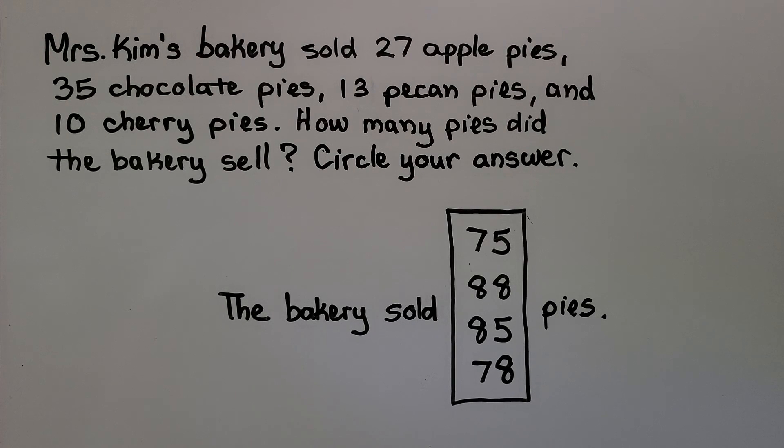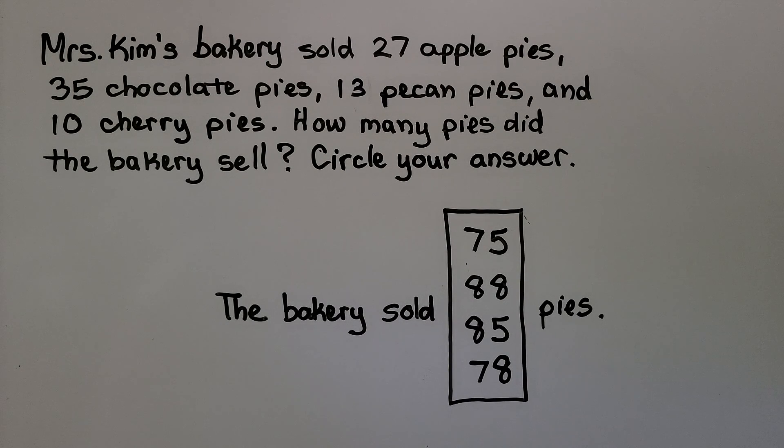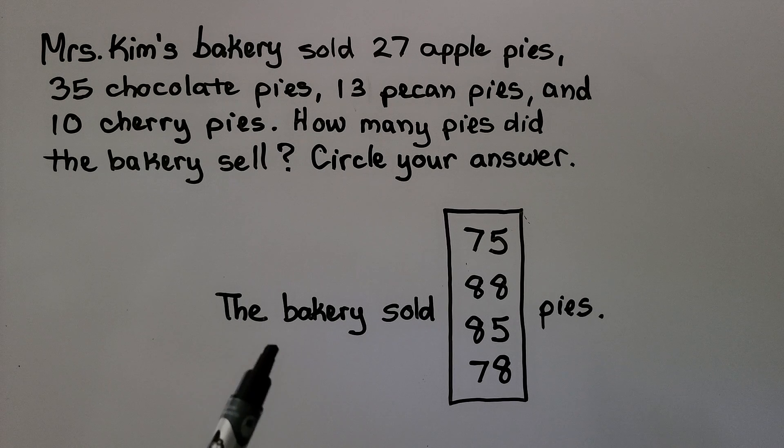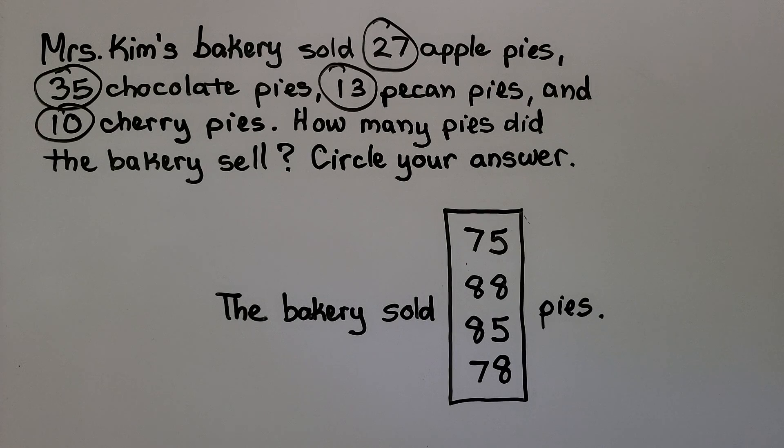Mrs. Kim's bakery sold 27 apple pies, 35 chocolate pies, 13 pecan pies, and 10 cherry pies. How many pies did the bakery sell? Circle your answer. So it says the bakery sold, and then we need to circle one of these for the correct number of pies that the bakery sold. We can circle the important information. We circle the number of different types of pies that they sold. And we need a total to find how many they sold. So we can write them as an addition problem.